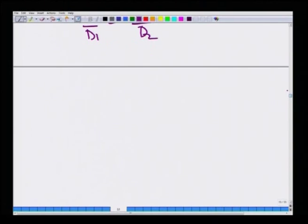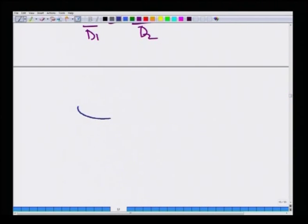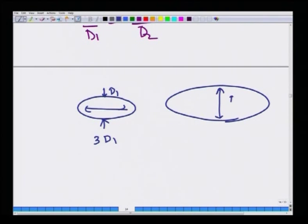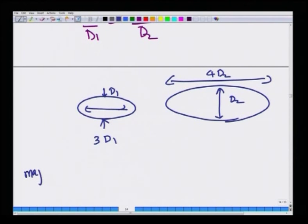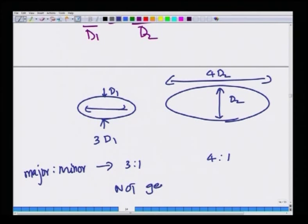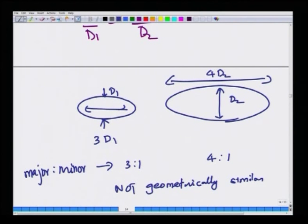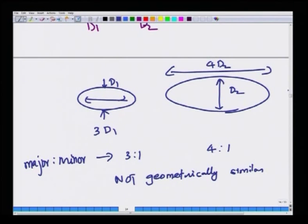Another example: consider flow past an ellipse where in one case the minor axis is d1 and major axis is 3d1, and in another the minor axis is d2 and major axis is 4d2. The major-to-minor ratio is 3:1 in the first and 4:1 in the second. These two systems are not geometrically similar because the ratios of various lengths must be identically the same across both systems to ensure geometric similarity.